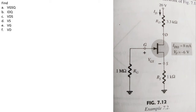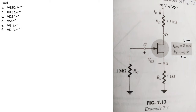Welcome everyone. In this lecture we are going to do one example. We have a self-bias configuration given with VDD = 20 volts, RD, IDSS = 8 milliamperes, and VP (pinch-off voltage) = -6 volts. We have an N-channel JFET and we need to find VGSQ, IDQ, VDS, VS, VG, and VD.